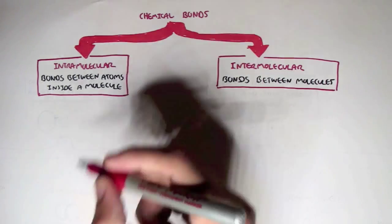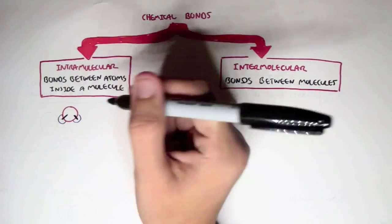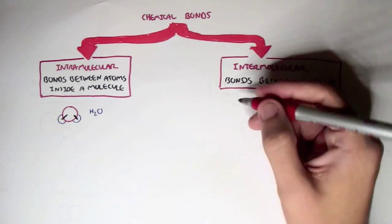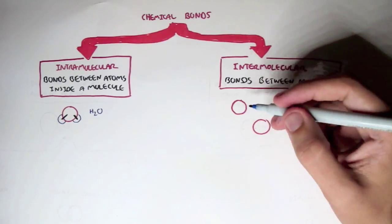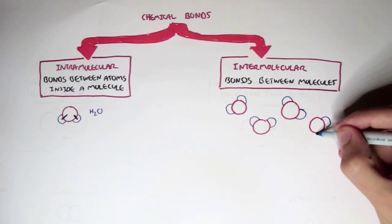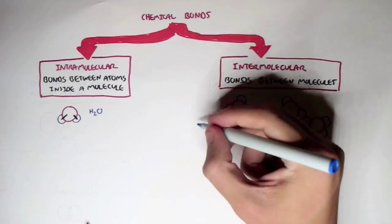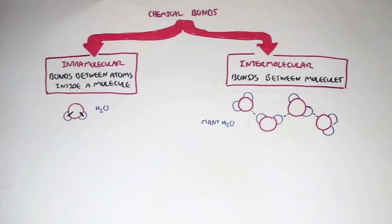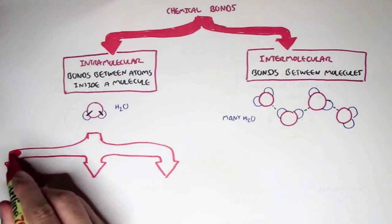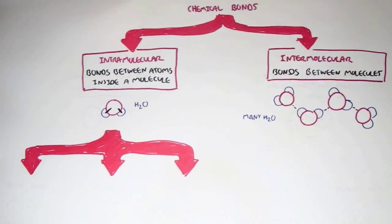For example, with a H2O molecule, the bonds between the hydrogen and the oxygen inside the molecule are intramolecular bonds. Intermolecular bonds occur when we have many H2O molecules, all with some form of attraction between them — bonds between the molecules. Now let's firstly consider intramolecular bonds.